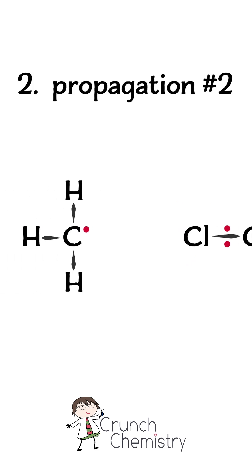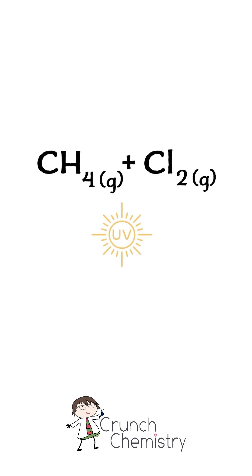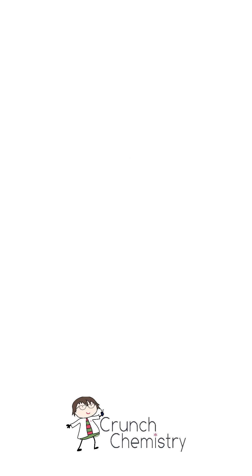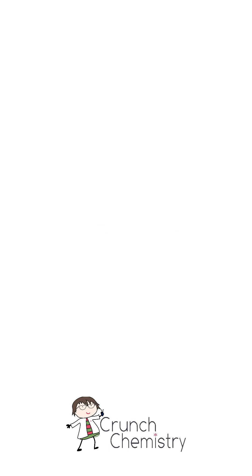Secondly, the methyl radical abstracts a chlorine atom from a molecule of chlorine, forming a haloalkane and another chlorine radical. The key to understanding this mechanism is to appreciate that of the two propagation steps, the first always makes the by-product, in this case HCl, and the haloalkane is made in the second propagation step.